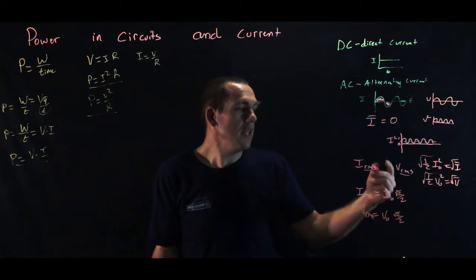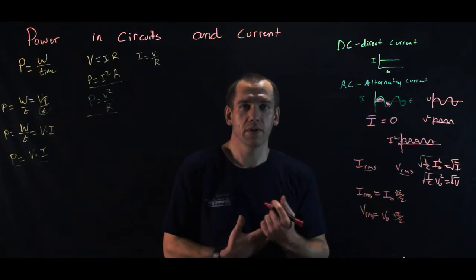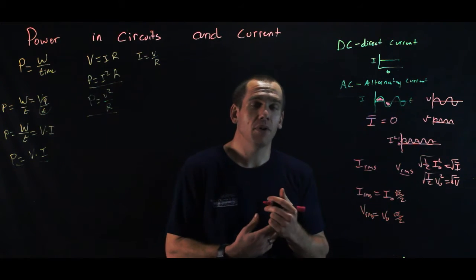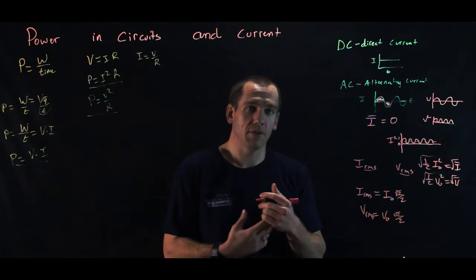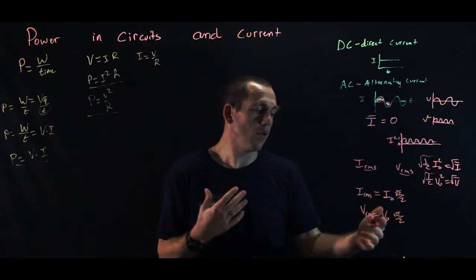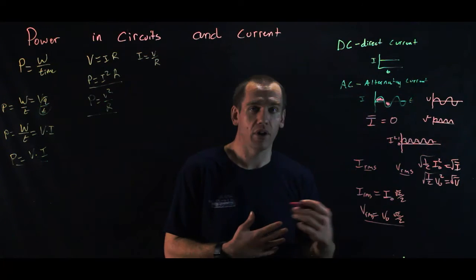Now those peak voltages are never what's actually reported. So when we say that there's 120 volts in a circuit in the outlet, we don't actually mean that the maximum voltage that comes out of is 120 volts, and that's not the minimum. The minimum is zero since that voltage is alternating back and forth. What that is is the RMS voltage and the RMS current that we're reporting.